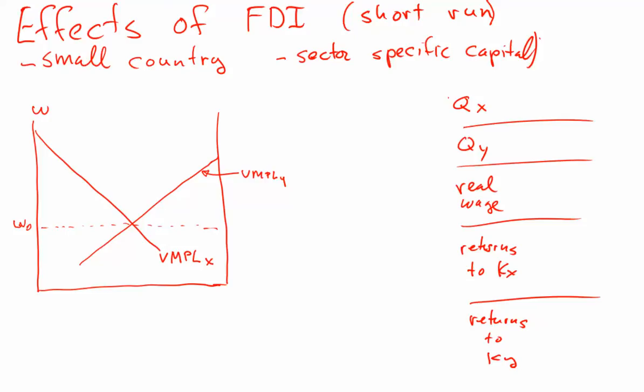In this video we're going to be taking a look at the impact of foreign direct investment in the short run. We're going to imagine this as an increase in the capital stock of a particular industry's capital. We're going to do this in the context of a small country so that the prices of the goods remain the same. We're going to have sector-specific capital — a type of capital in industry X and a type of capital in industry Y — and we're going to use the labor market equilibrium curves to do this analysis.